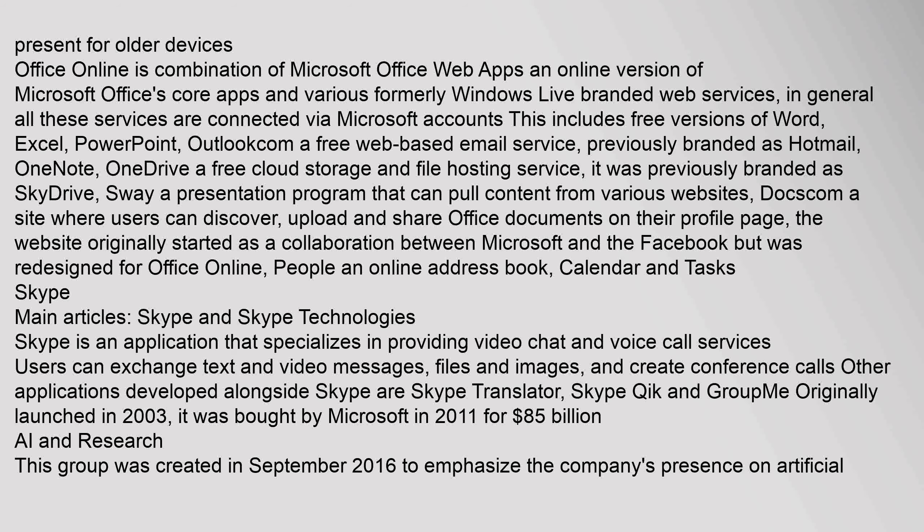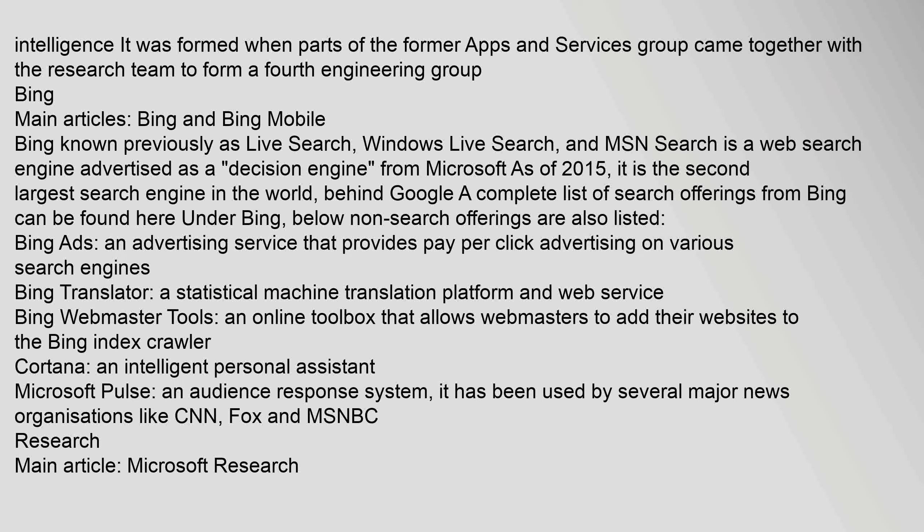The AI and Research group was created in September 2016 to emphasize the company's presence on artificial intelligence. It was formed when parts of the former Apps and Services group came together with the research team to form a fourth engineering group. Bing, known previously as Live Search, Windows Live Search, and MSN Search, is a web search engine advertised as a decision engine from Microsoft.